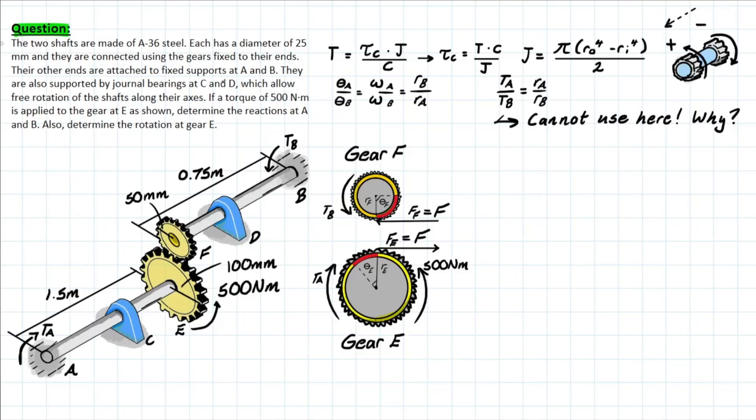Their other ends are attached to fixed supports at A and B, and they are also supported by journal bearings at C and D which allow for free rotation of the shaft along their axes. If a torque of 500 N·m is applied to gear E as shown, determine the reactions at A and B, and also determine the rotation at gear E.